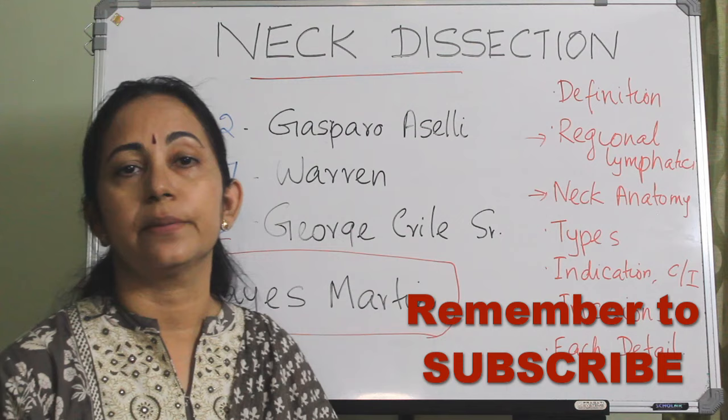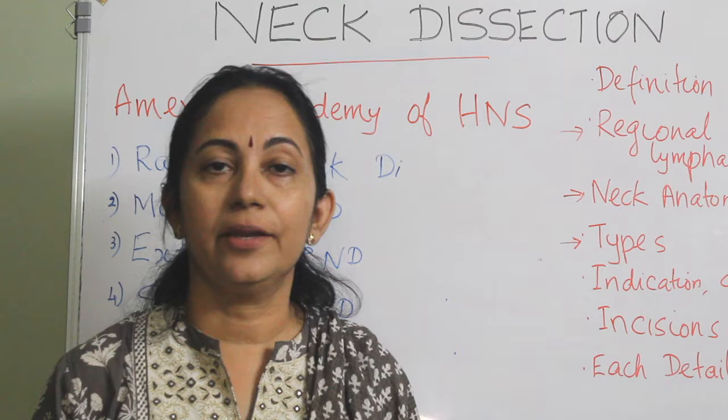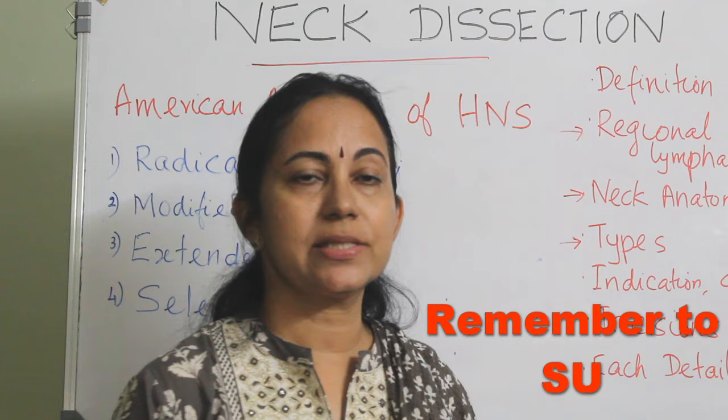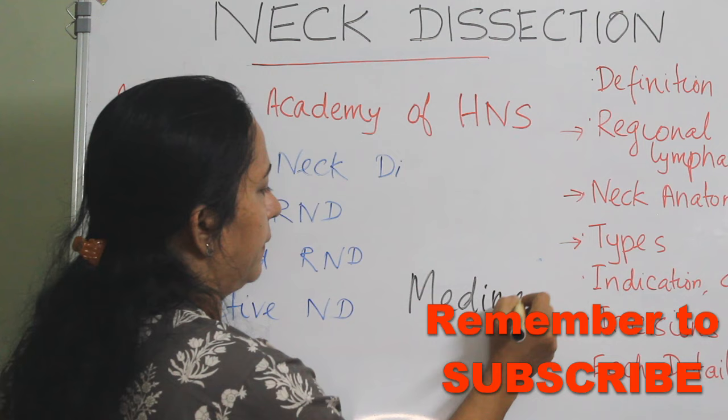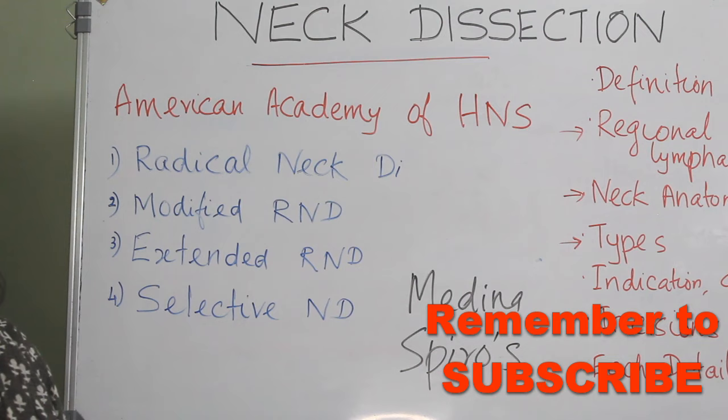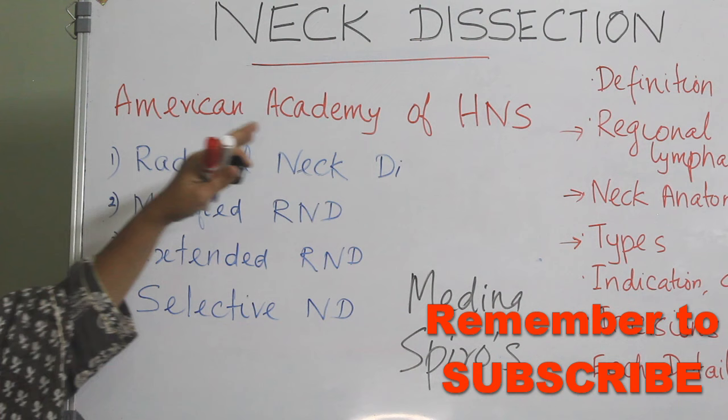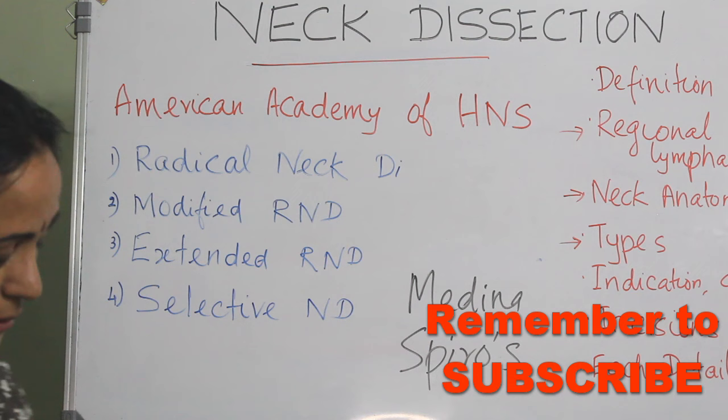There are different classifications to divide neck dissection, such as the Medina classification and Spiro's classification. But the widely and internationally accepted one is from the American Academy of Head and Neck Surgery, which is also endorsed by the American Society of Head and Neck Surgery.